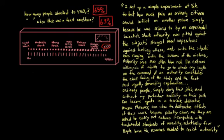He wrote, I set up a simple experiment at Yale to test how much pain an ordinary citizen would inflict on another person simply because he was ordered to by an experimental scientist. Stark authority was pitted against the subject's strongest moral imperatives against hurting others. And with the subject's ears ringing with the screams of the victims, authority won more often than not. The extreme willingness of adults to go to almost any length on the command of an authority constitutes the chief finding of this study and the fact most urgently demanding explanation. Ordinary people simply doing their jobs and without any particular hostility on their part can become agents in a terrible destructive process. Moreover, even when the destructive effects of their work became patently clear and they were asked to carry out actions incompatible with fundamental standards of morality, relatively few people have the resources needed to resist authority.